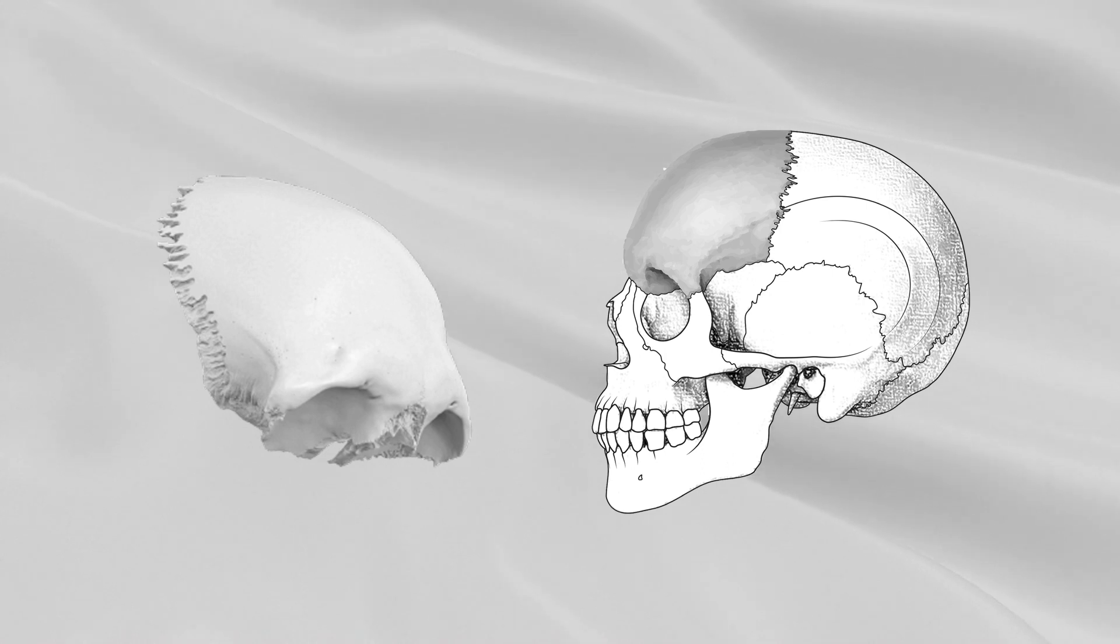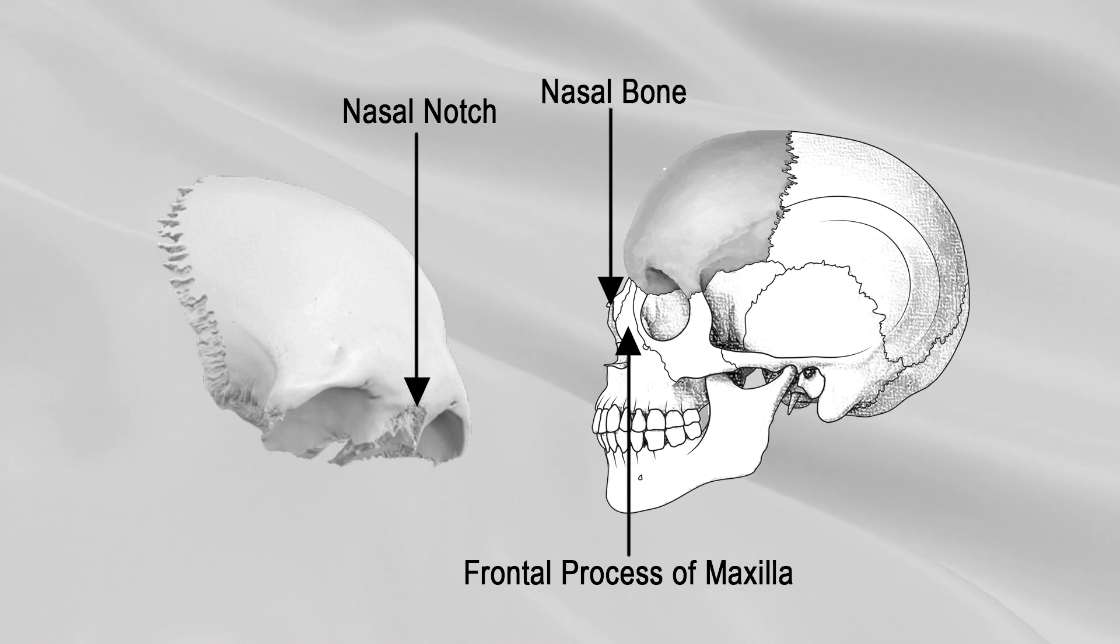Between the supraorbital margins, the squama presents a rough, uneven interval, the nasal notch, which articulates on either side of the midline with the nasal bone and laterally with the frontal process of the maxilla and with the lacrimal bone.